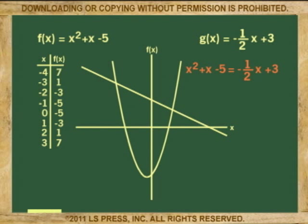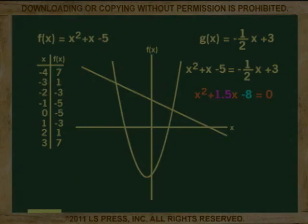Combining like terms, we add 1/2x to both sides and subtract 3 from both sides, giving us the quadratic equation x² + 1.5x - 8 = 0. All we have to do now to find the intersecting points is to factor the trinomial on the left. Because finding two numbers whose product is -8 and whose difference is 1.5 by simple factoring is difficult and lengthy, we turn to the quadratic formula.